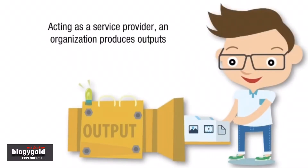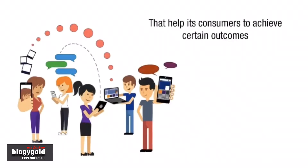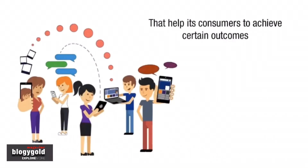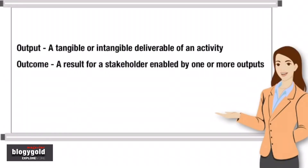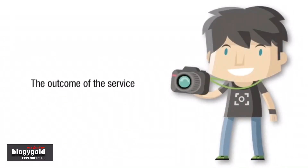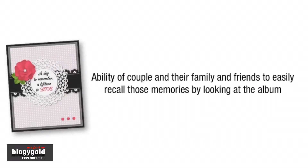Acting as a service provider, an organization produces outputs that help its consumers to achieve certain outcomes. An output is a tangible or intangible deliverable of an activity. An outcome is a result for a stakeholder enabled by one or more outputs. For example, the outcome of a photography service is the preservation of memories and the ability of the couple, and their family and friends, to easily recall those memories by looking at the album.